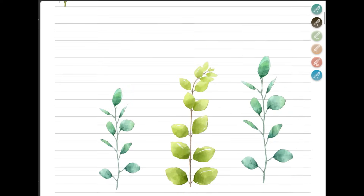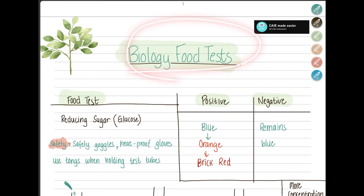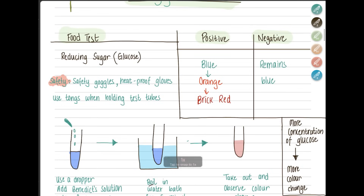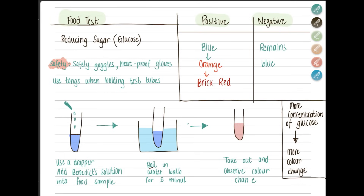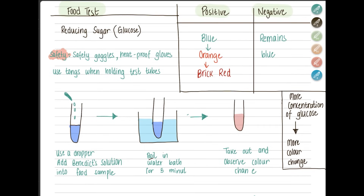The first thing we're going to study is biology food tests. You will be asked to write down the food test and identify the change in positive or negative results. For reducing sugar or glucose, this is for liquid samples. If you have a solid sample, crush it, mix it with water, then add it to your test tube. Add Benedict's solution into the food sample, then boil it in a water bath for five minutes. A water bath means there is a heat source but with water around it, so it's not directly in contact with the heat.